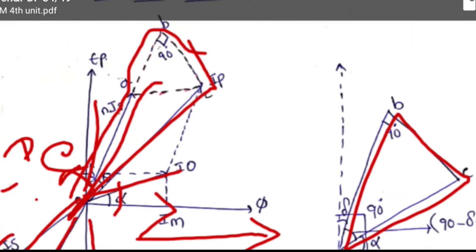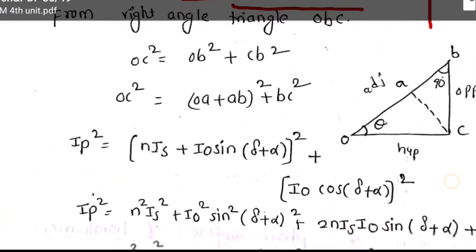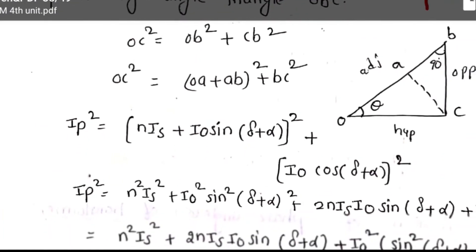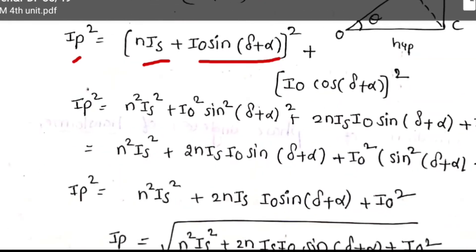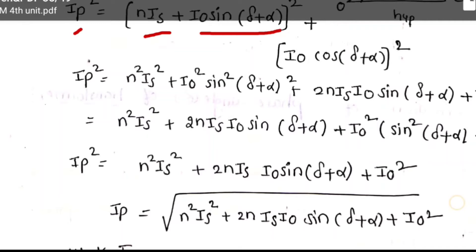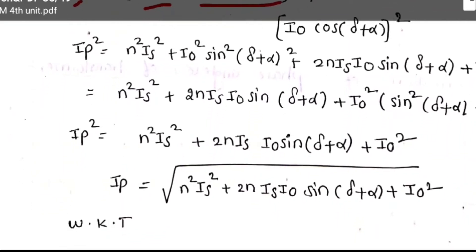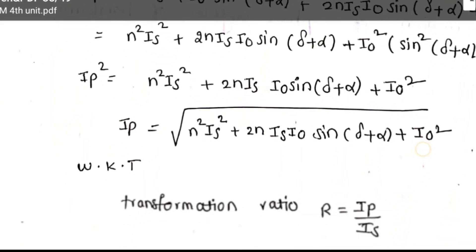From the triangle, OC squared equals OA squared plus AB squared plus BC squared. Substituting: OC is IP, OA is N·IS, AB can be written as I0·sin(delta + alpha) squared, plus BC is I0·cos(delta + alpha) squared. After solving — applying sin(delta + alpha), expanding A squared plus B squared plus 2AB — you can get IP squared equal to N squared plus 2N·IS·I0·sin(delta + alpha) plus I0 squared.